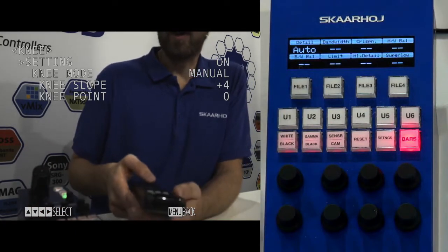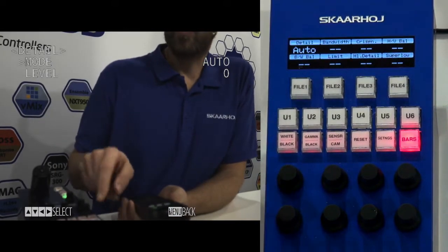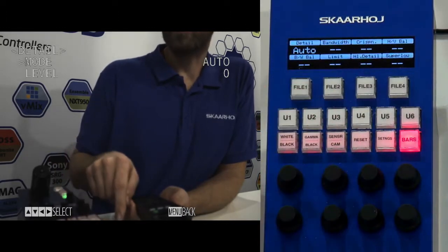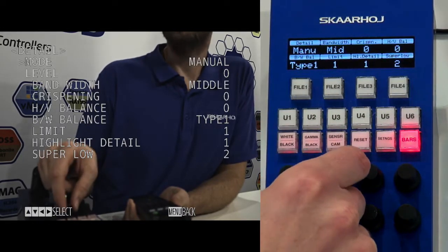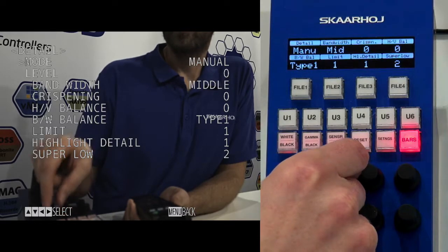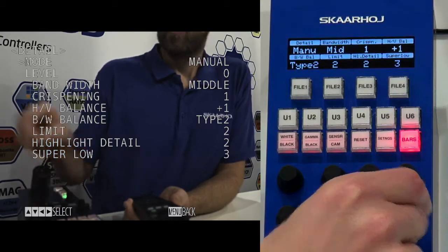Finally we have the details menu. It's currently in auto mode, so all these settings are not enabled until I turn it to manual mode, and then we can now select and adjust all these detail settings in this menu.